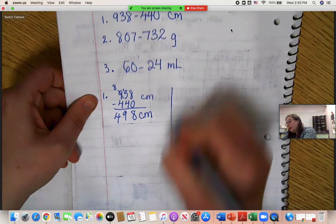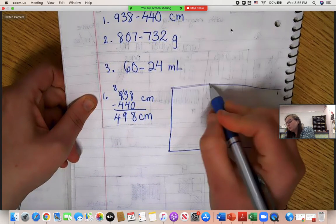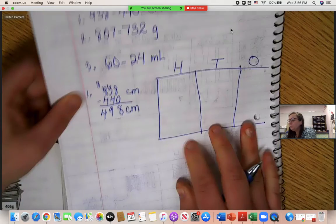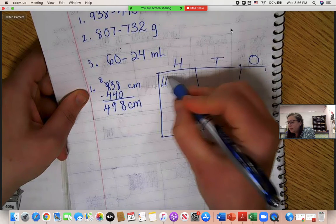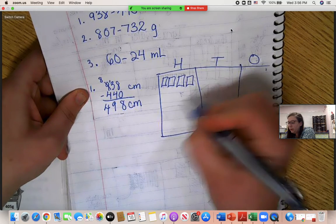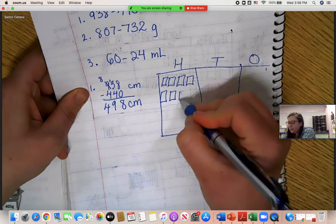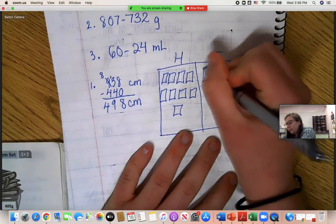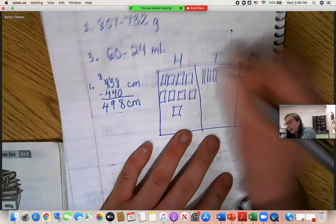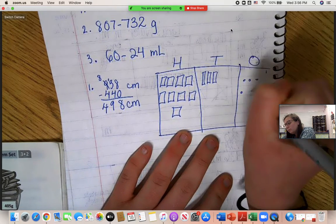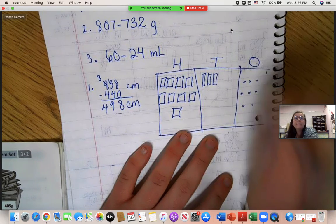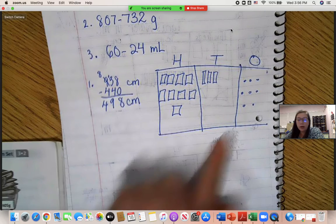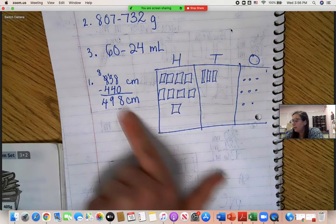Okay. If you prefer doing place value, hundreds, tens, ones, 900, one, two, three, four, five, six, seven, eight, nine hundred, thirty, eight. Okay. Take away no ones. Easy. Take away four tens. Can't do.